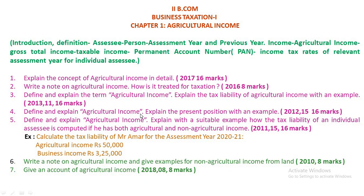Question 5: Define and explain Agricultural Income with a suitable example — how the tax liability of an individual assessee is computed if he has both Agricultural and Non-Agricultural Income. Question 6: Write a note on Agricultural Income and give an example for Non-Agricultural Income from land. Question 7: Give an account of Agricultural Income. If you analyze these questions, you can conclude that there will be one question in the exam paper relating to Agricultural Income.